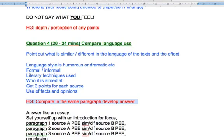So make sure you set yourself up paragraph about source one and you do a P.E. and then you mention similarity or difference to source B and then you give a P.E. Paragraph two, talk about source A, P.E, similar and different, source B, P.E.